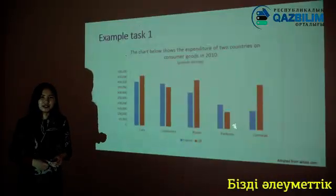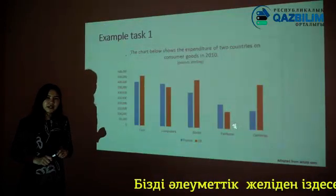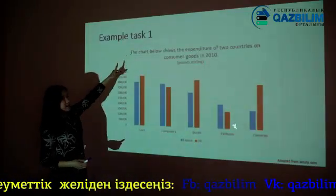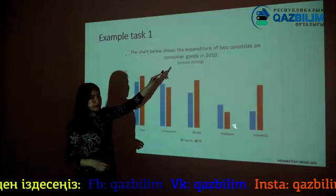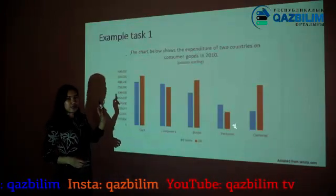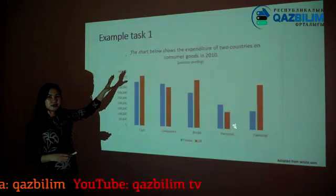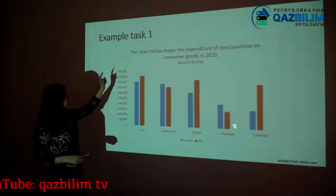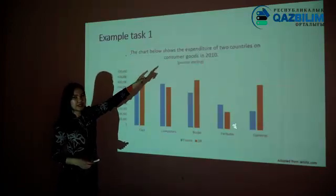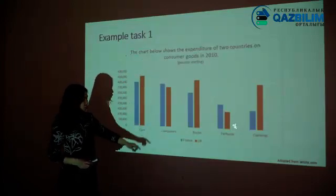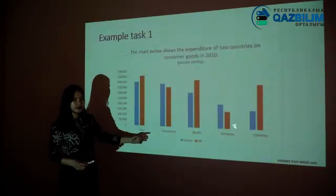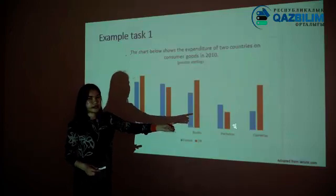Today I am going to discuss writing tasks briefly, and in particular let's concentrate on writing task 1. We are given a model graph. The title of the graph is: 'The chart below shows the expenditure of two countries on consumer goods in 2010.' On IELTS there will always be a title or task given. This bar chart shows the expenditure of two countries — France and UK — on consumer goods: cars, computers, books, perfume, and cameras.